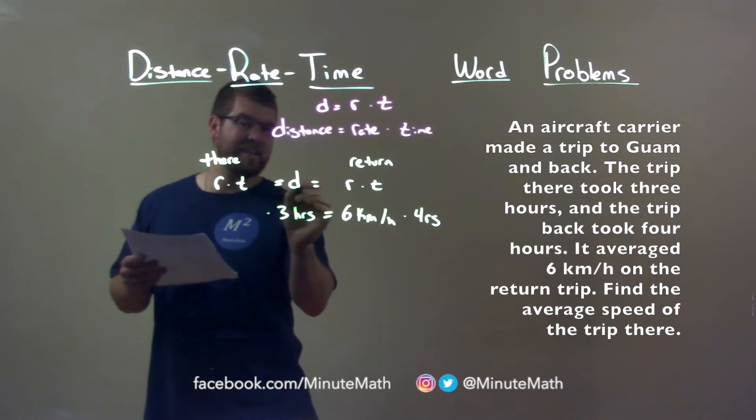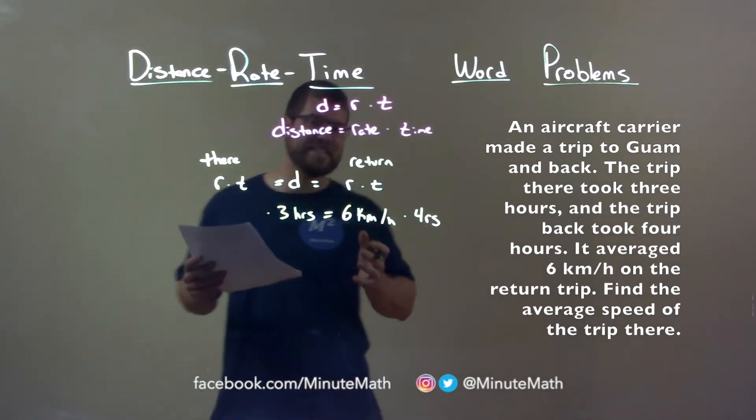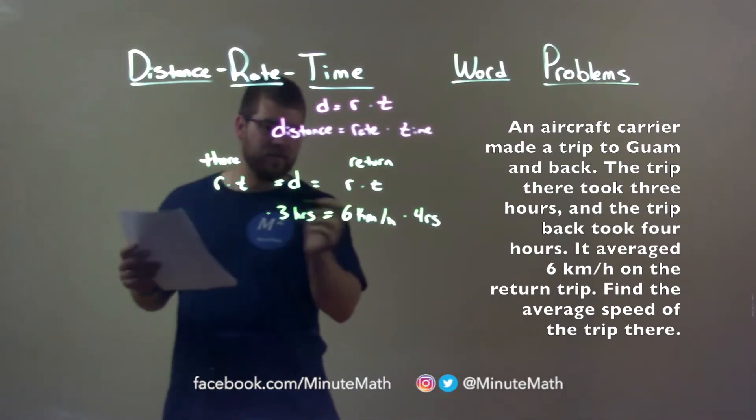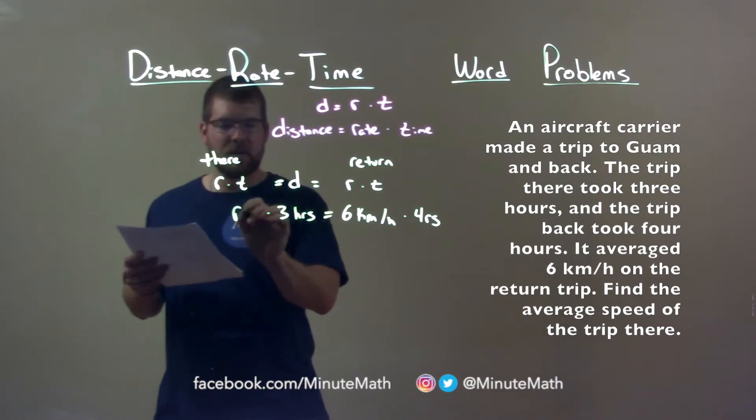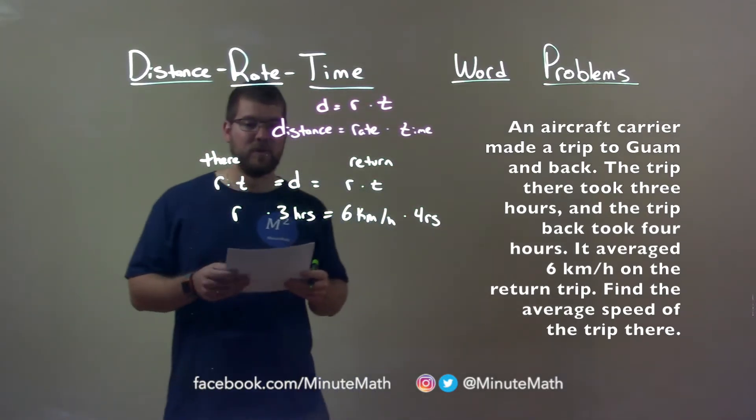Notice I'm getting rid of the distance, so I don't need that anymore. We don't actually need to know what that distance is because they're equal. The rate on the way there is what we want to find, the average speed on the trip there.